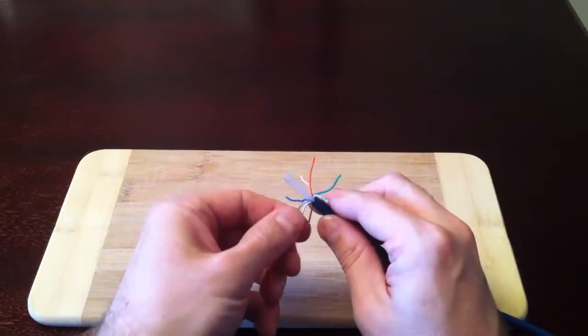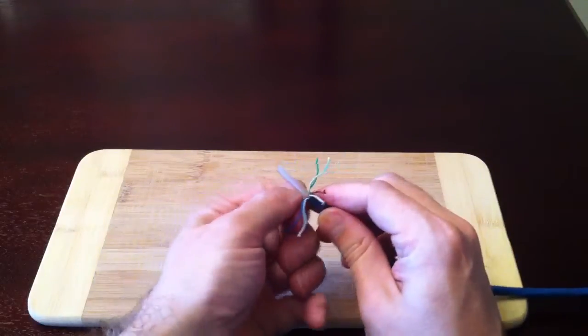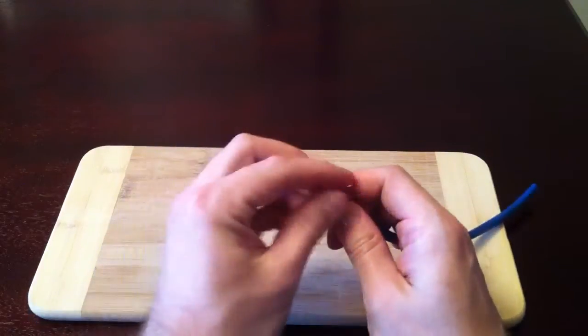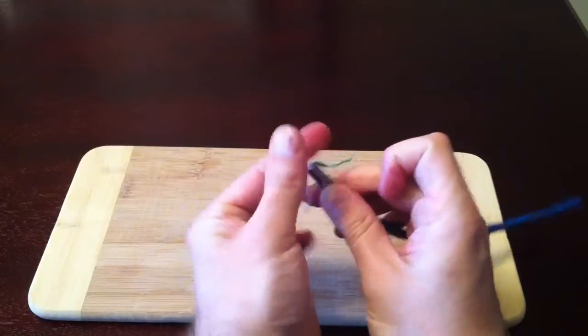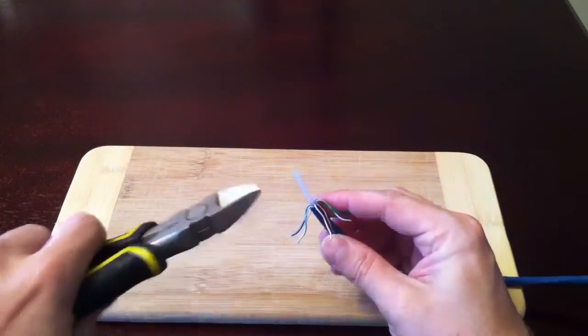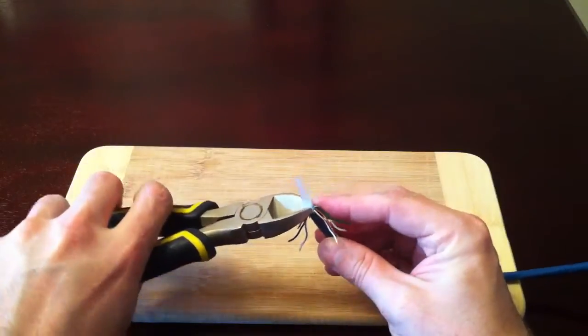Now that we have the wires individually separated, you'll notice that there's a plastic piece in the middle that is no longer needed. You'll want to get your cutting pliers or side cutters and cut that plastic piece as close to the cable as possible.